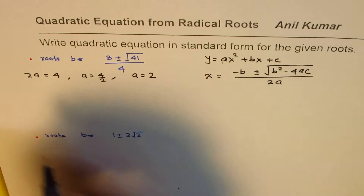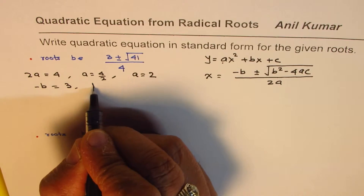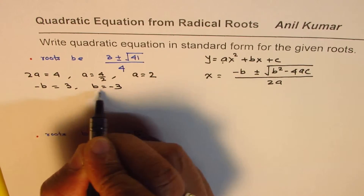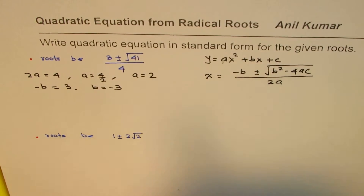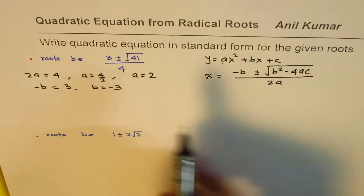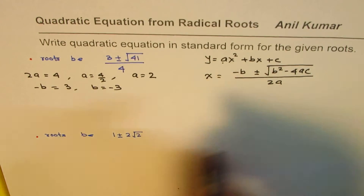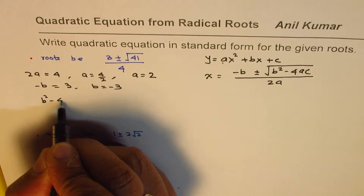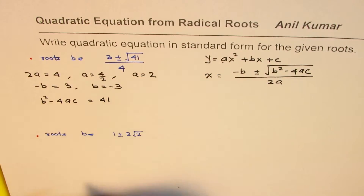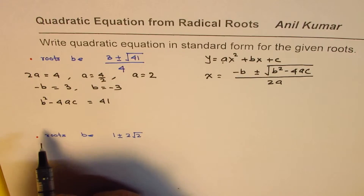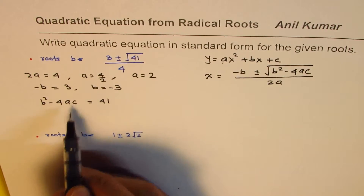For b, we know −b = 3, and that means b = −3. So we get the value of b as well. Now the question is how to find c. Within the radical sign we have 41, and in the formula we have b² − 4ac, so we write b² − 4ac = 41. We know b = −3 and a = 2, so we can find c.